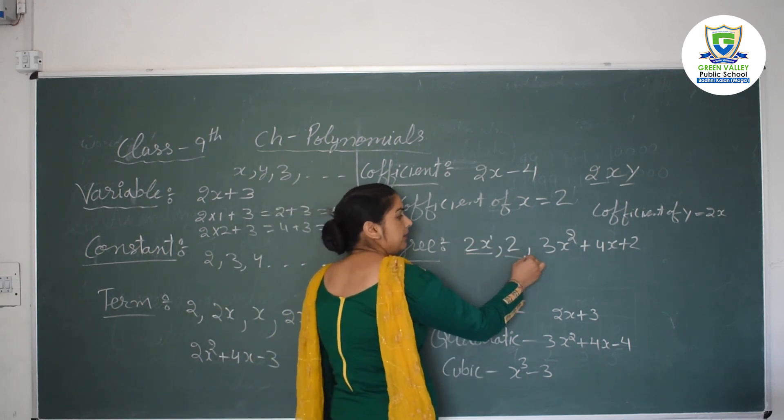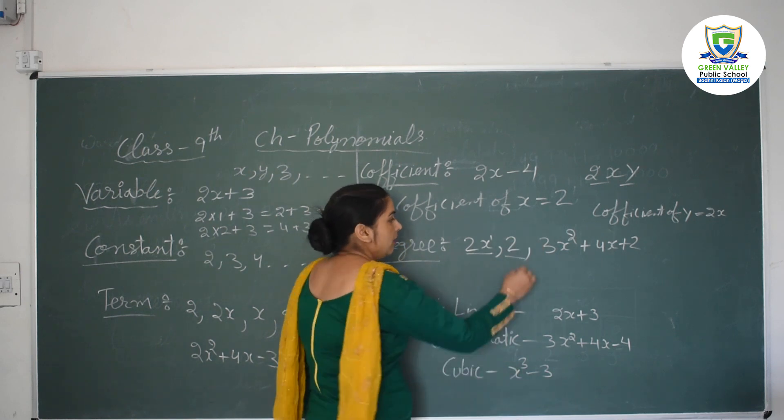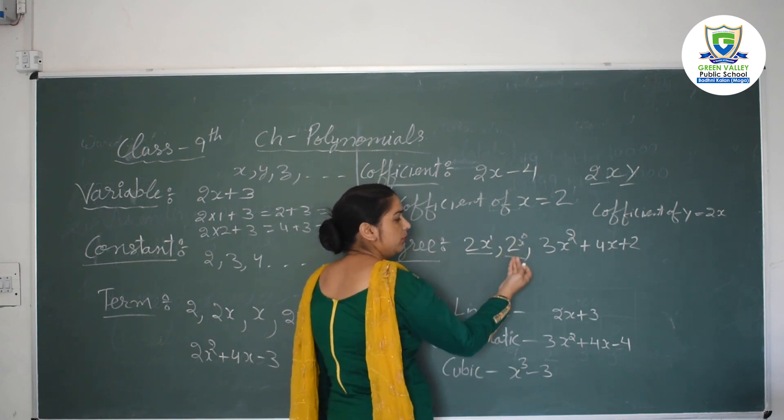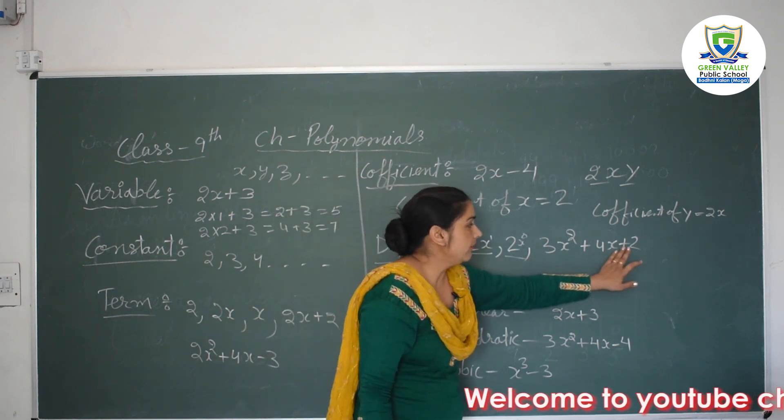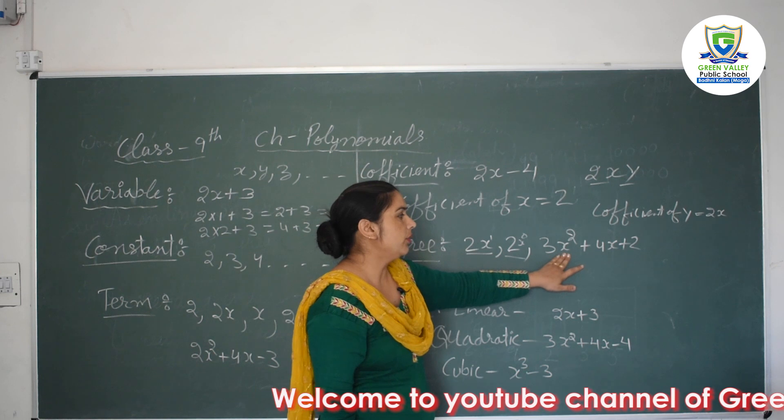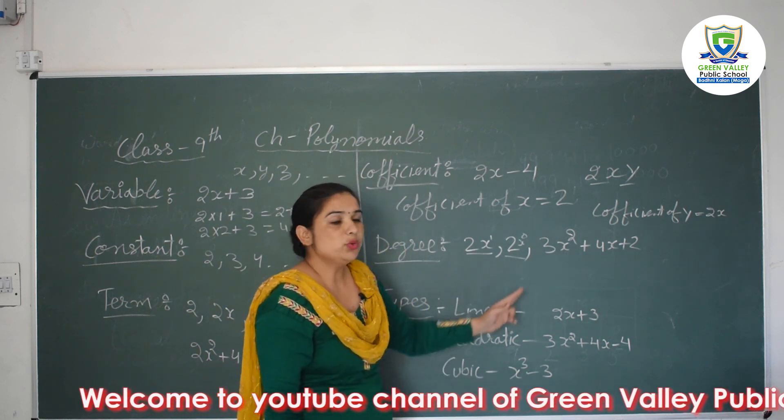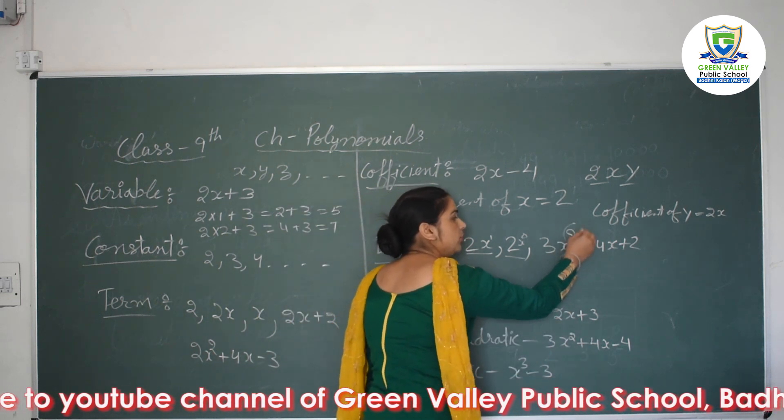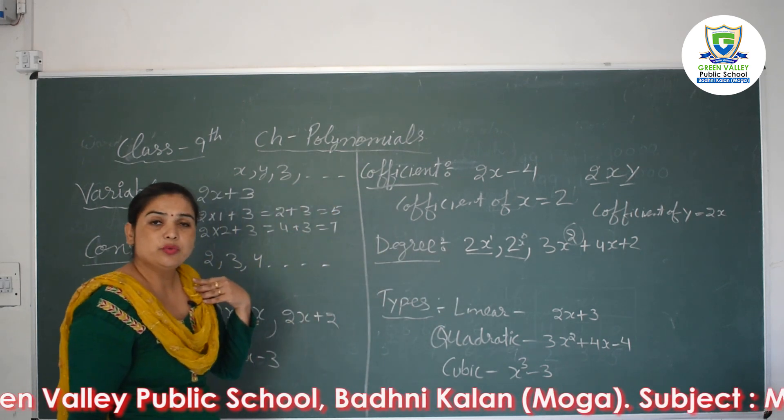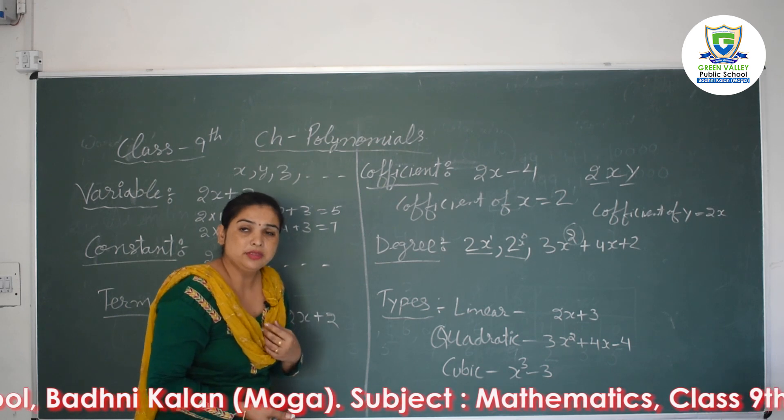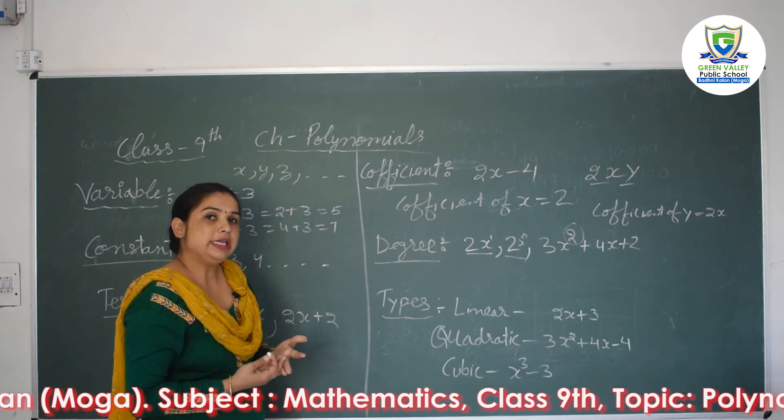Here no variable, then we can say x power 0 we can write. So the degree of this is 0. And here if you can observe, the highest power of x is 2. So here degree is 2. It is very simple, you have to just check that which is the highest power of variable. That is called your degree.